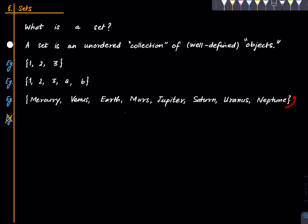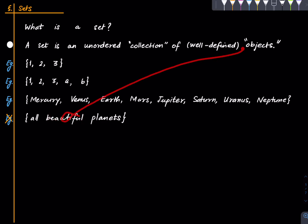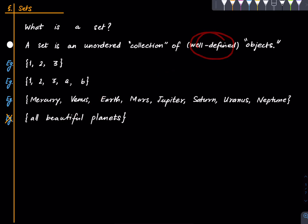Now here is something that is not a set: the set of all beautiful planets in the solar system. This is not a set because 'beautiful' is a subjective experience and hence not well-defined. So this adjective of well-definedness is important — a planet may be beautiful to one person and ugly to another.